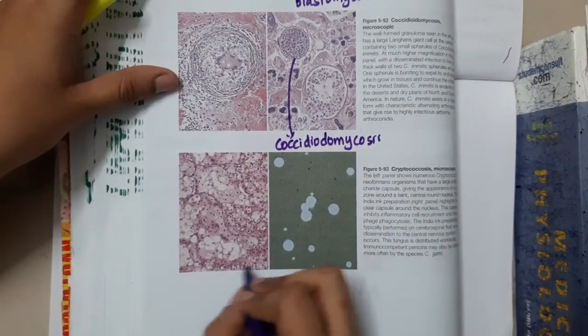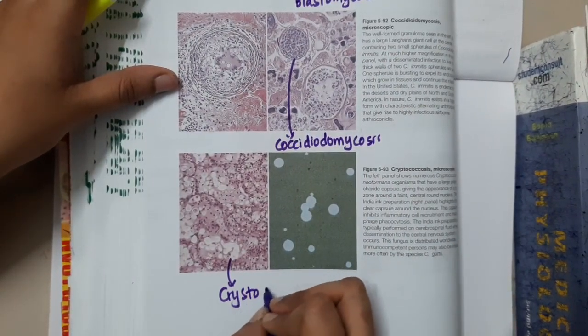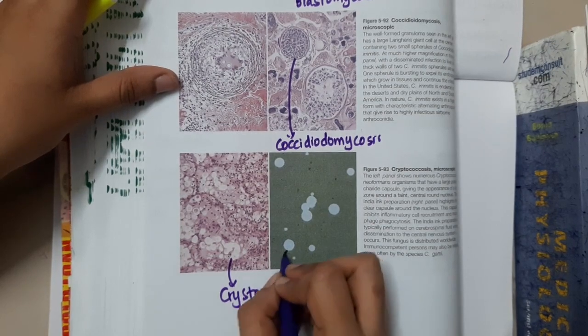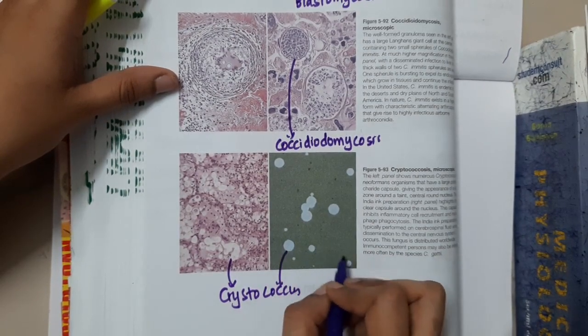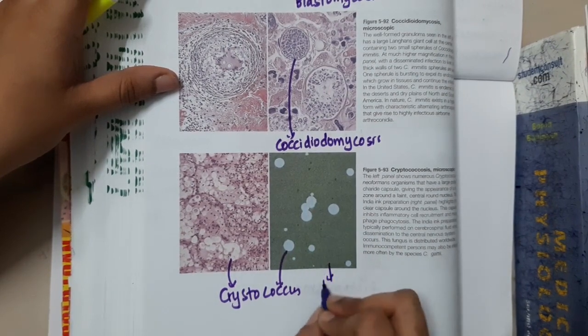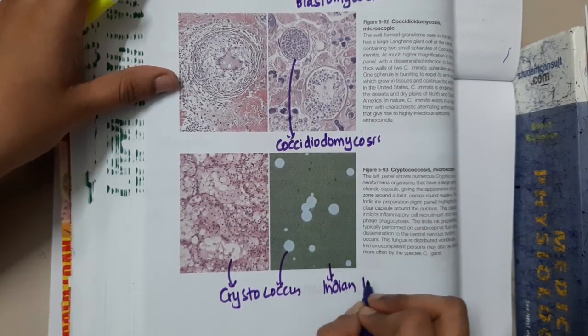This is the picture showing cryptococcus, and in this cryptococcus the capsule is clearly seen. The capsule is the one which is not stained, and this is Indian ink preparation showing cryptococcus.